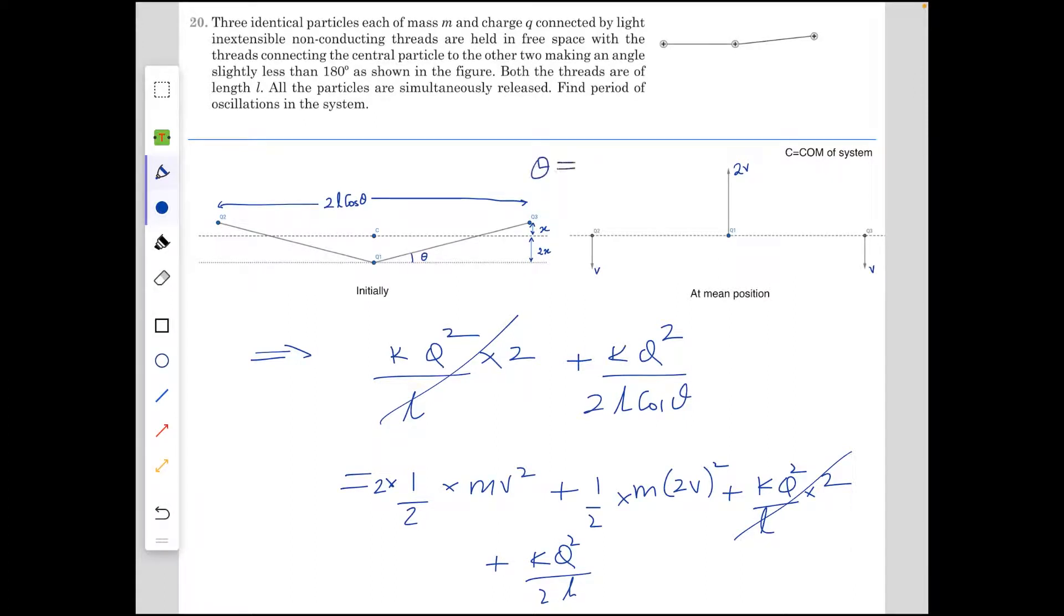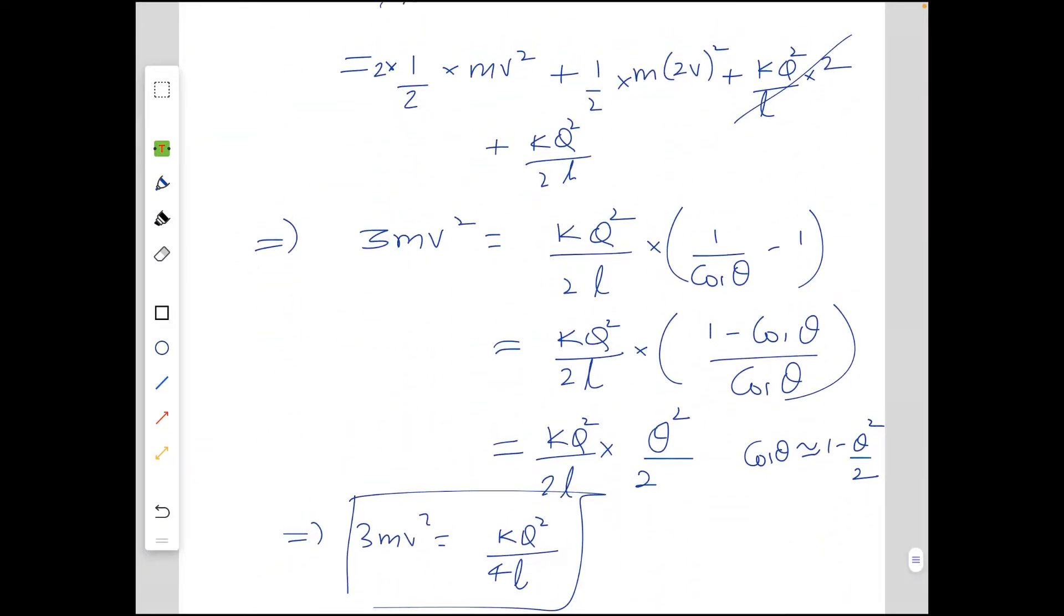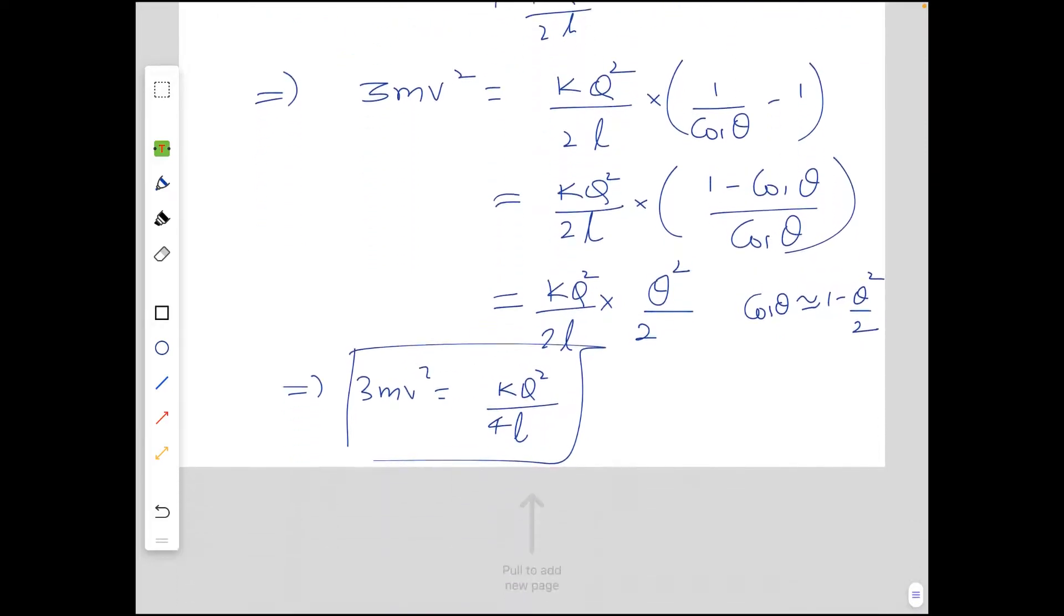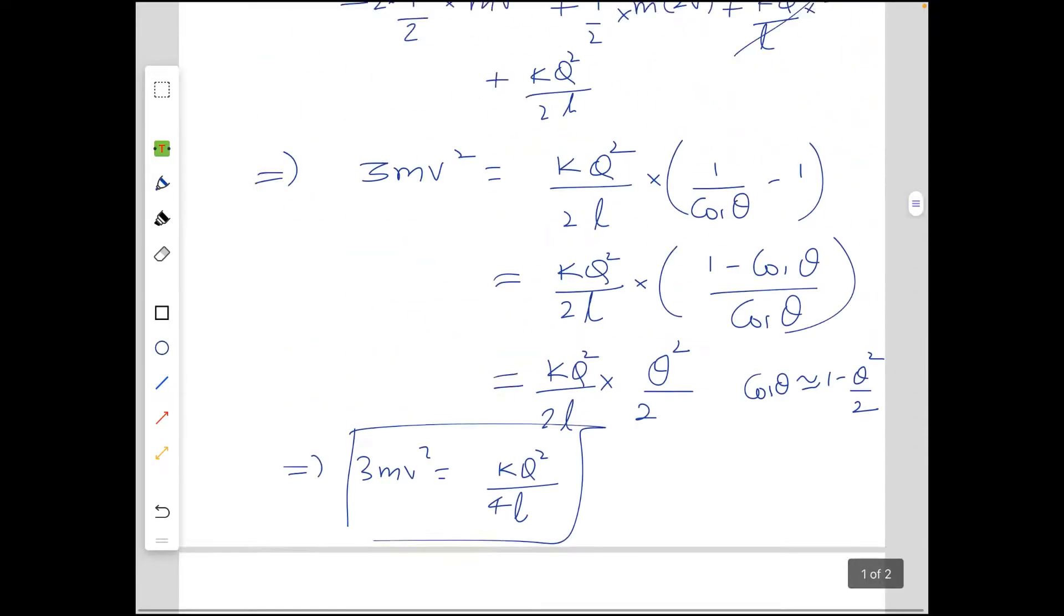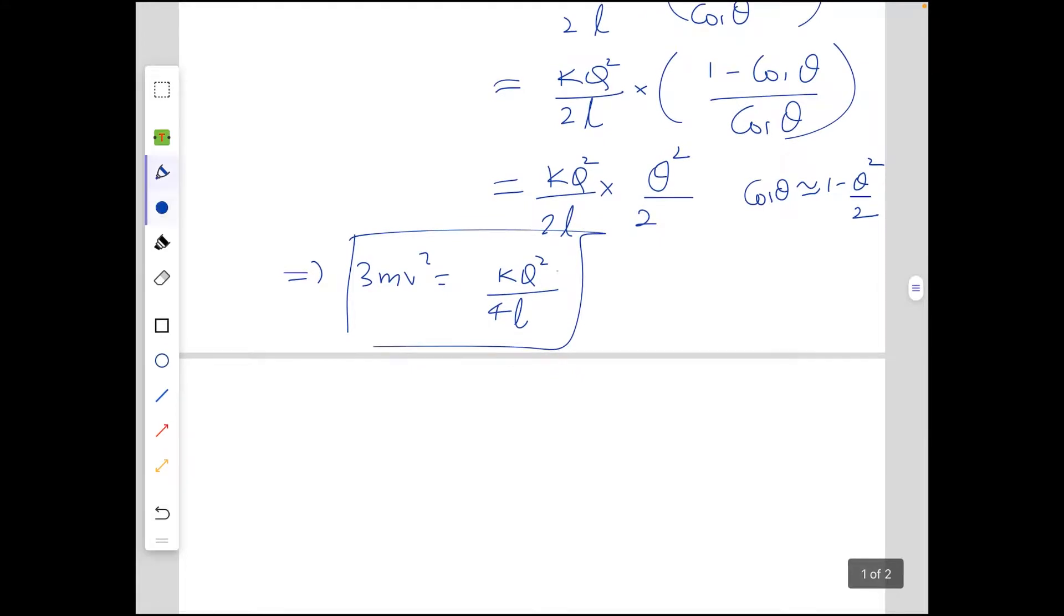What else we can observe here is that theta approximately equals 3x/L as theta is a small angle. Substituting that here, what we get is 3mV² equals kQ² times 9x²/L² over 4L. So 3 cancels and we get mV² equals 3kQ²x²/(4L³).